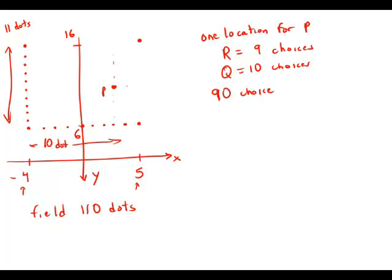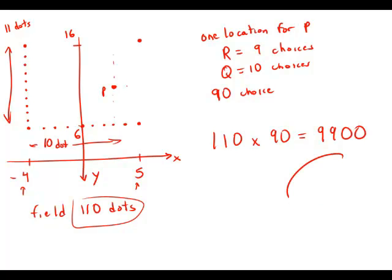And that's for one P. How many P's can we pick? We could pick any dot in the entire field to be P. So that means that at any of those 110 dots, we have 90 possible triangles. And so 110 times 90 is 9900. And this is answer choice C.